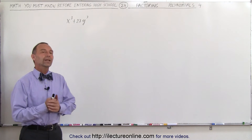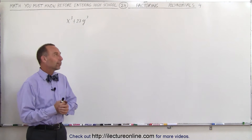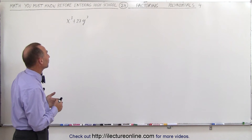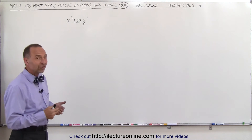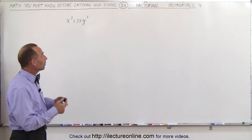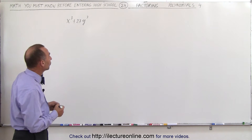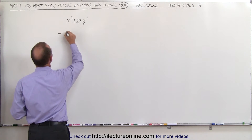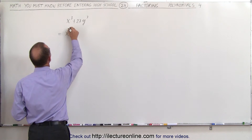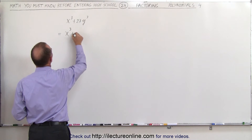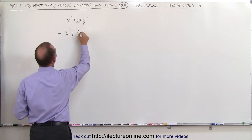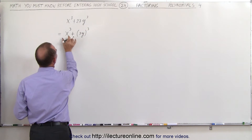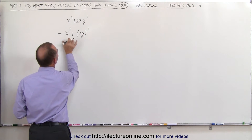Welcome to Electurnline. Here we have a very special situation. You need to recognize this as the sum of cubes. In other words, we can rewrite this as the quantity x cubed plus the quantity 3y cubed. So it's the sum of cubes.